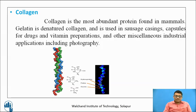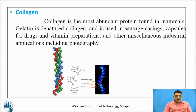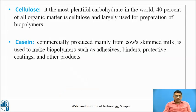This is collagen — the most abundant protein found in mammals. Gelatin is denatured collagen and is used in casings, capsules for drugs and vitamin preparations, and other miscellaneous industrial applications including photography. Cellulose is the most plentiful carbohydrate in the world; 40% of all organic matter is cellulose, and it is largely used for preparation of biopolymers.